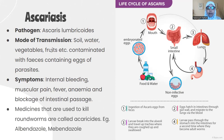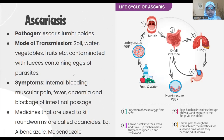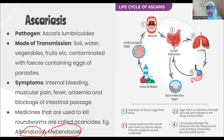Treatment involves ascaricides. Examples are albendazole and mebendazole — two drugs used to kill roundworms. Other anti-helminthic drugs include piperazine, levamisole, and pyrantel, which can also kill roundworms in the stomach.